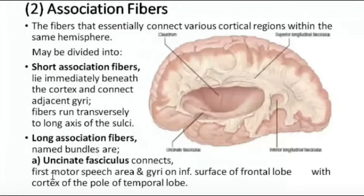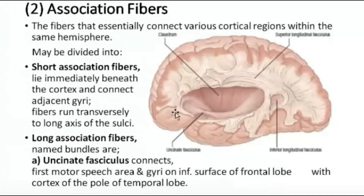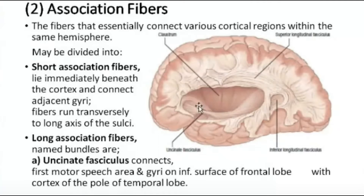The uncinate fasciculus connects the first motor speech area of the frontal lobe and the gyri of the inferior surface of the frontal lobe with the cortex of the pole of the temporal lobe. So the uncinate fasciculus connects the frontal lobe speech area with the temporal lobe.